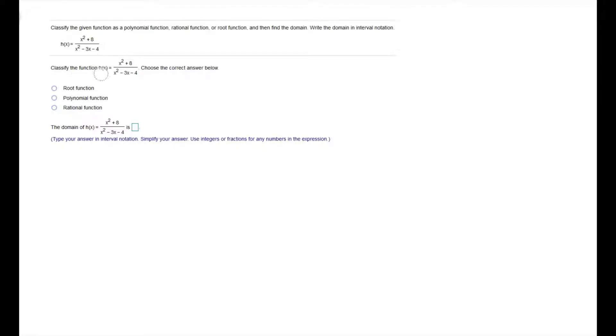So first we want to classify it. We've got our three types: root, polynomial, and rational. Root functions are going to have radicals in them, square roots, cube roots, and so forth. Polynomial functions are the ones with no fractions, no radicals - you're going to have just variables to whole number powers. And then you have the last category, rational functions. Those are going to have variables in the denominator. So you can see that this example does have variables in the denominator, so I'm going to categorize this as a rational function.